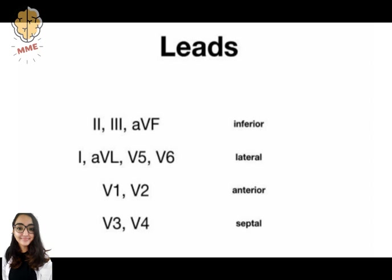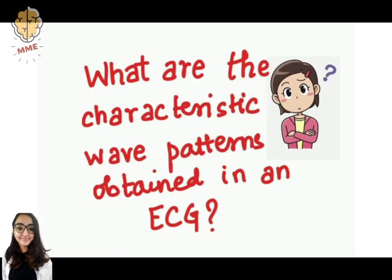The six standard leads which are recorded from the electrodes attached to the limbs can be thought of as looking at the heart in a vertical plane. The six V leads look at the heart in the horizontal plane from the front and the left side. These are placed on the precordium.